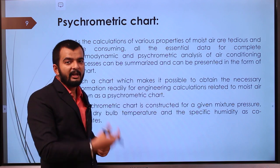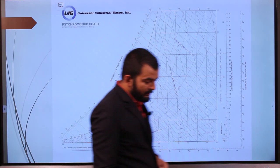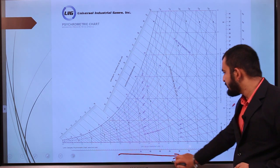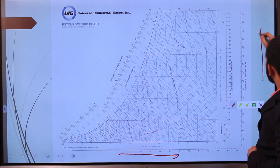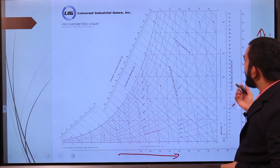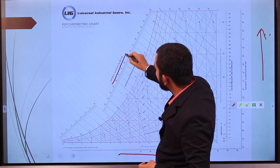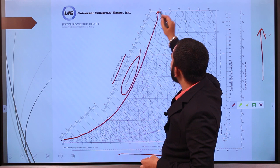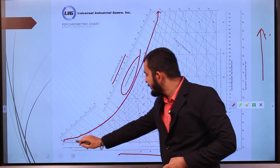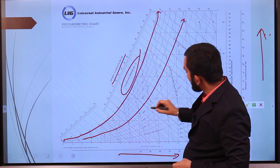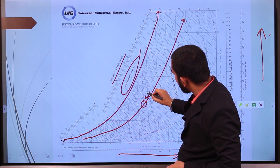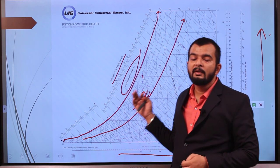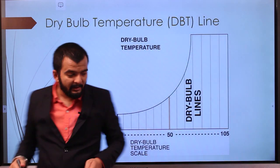A psychrometric chart is constructed for a given mixture pressure using dry bulb temperature as the x-axis and specific humidity as the y-axis. The chart plots various properties like saturation temperature, saturation humidity, and wet bulb temperature. As you can see, the x-axis gives dry bulb temperature and the y-axis gives specific humidity of the mixture.